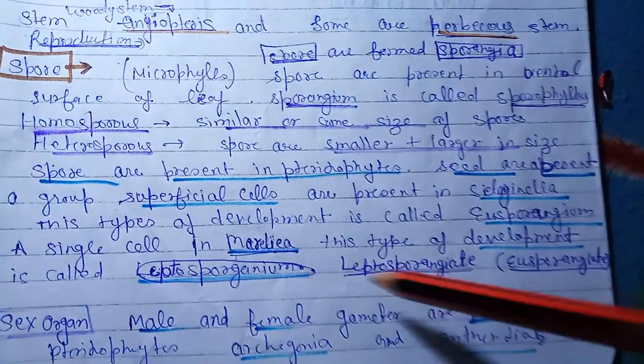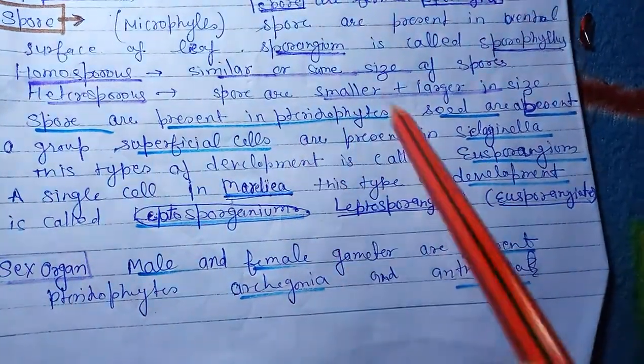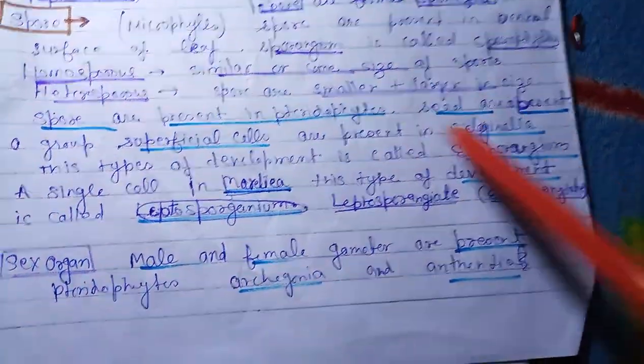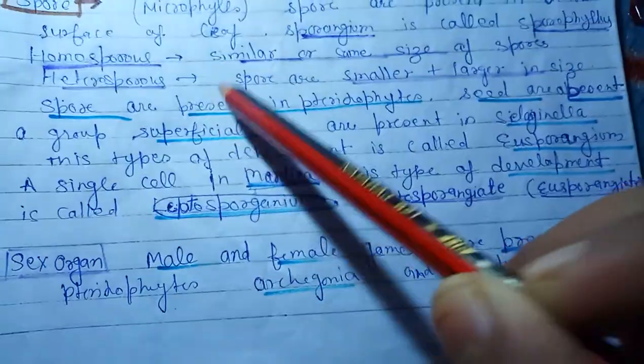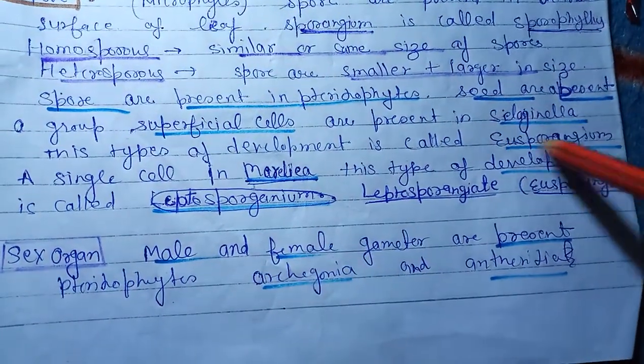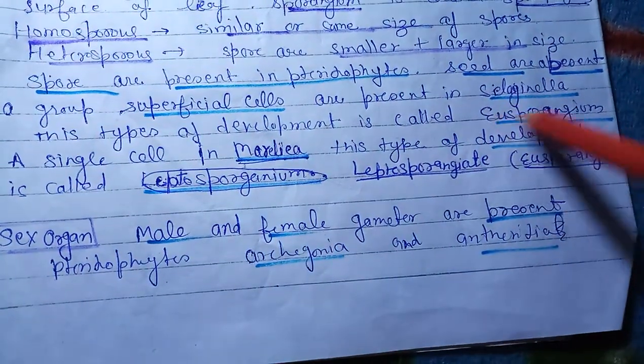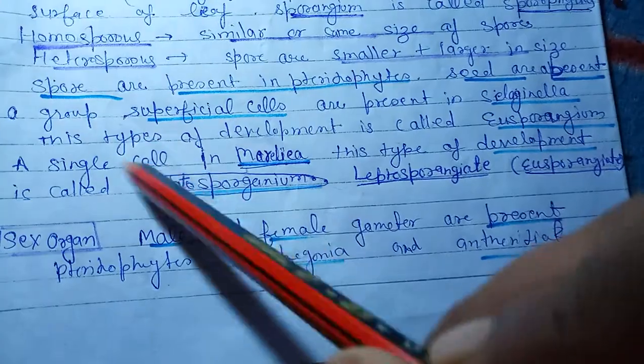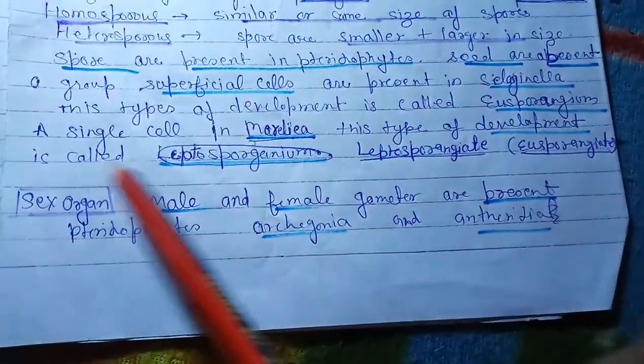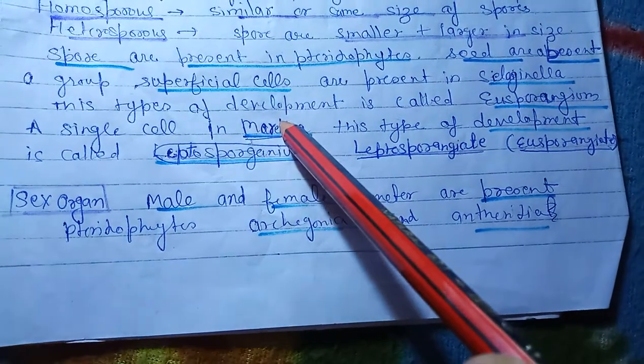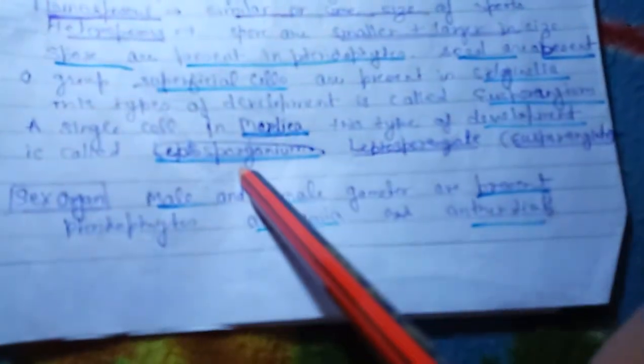Spores are present in pteridophytes and seeds are present in a group of superficial cells. Superficial cells are present in case of Selaginella and this is development. Superficial cell development is called eusporangium, and a single cell of Marsilea development is called leptosporangium - leptosporangiate.